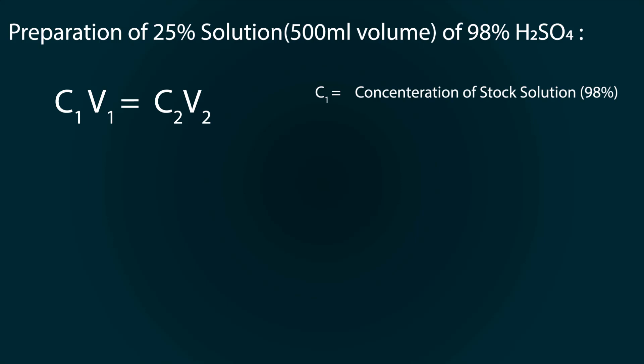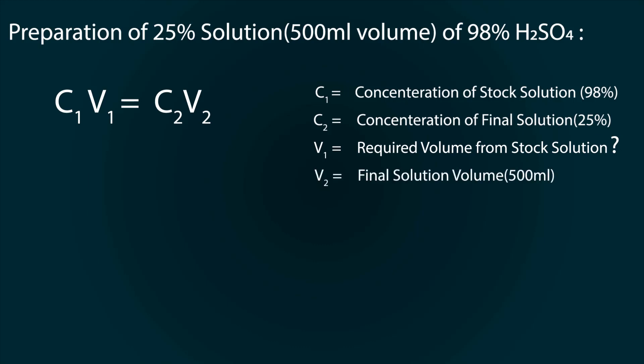C1 is concentration of stock solution which is 98%. C2 is concentration of final solution which is 25%. V1 is required volume from stock solution. V2 is final solution volume which is 500ml.